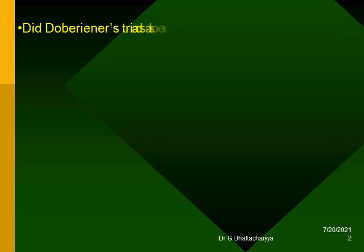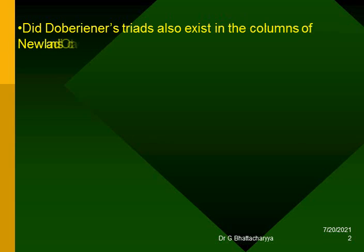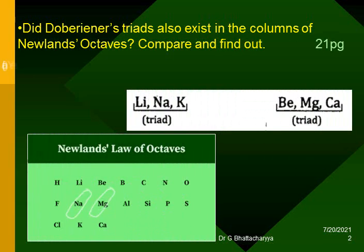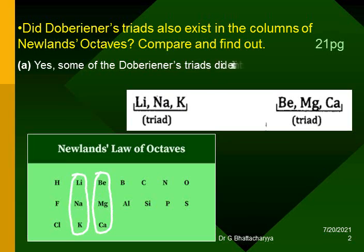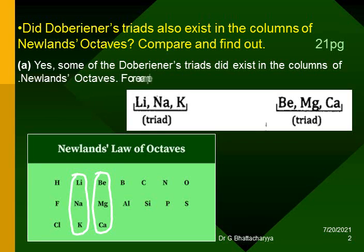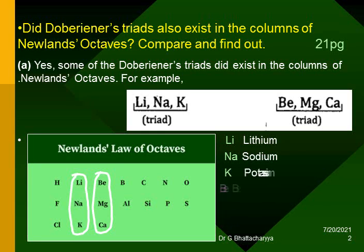Did Dobereiner's triads also exist in the columns of Newland's octaves? Compare and find out. Yes, some of Dobereiner's triads did exist in the columns of Newland's octaves. For example, Lithium, Sodium, Potassium and Beryllium, Magnesium, Calcium.